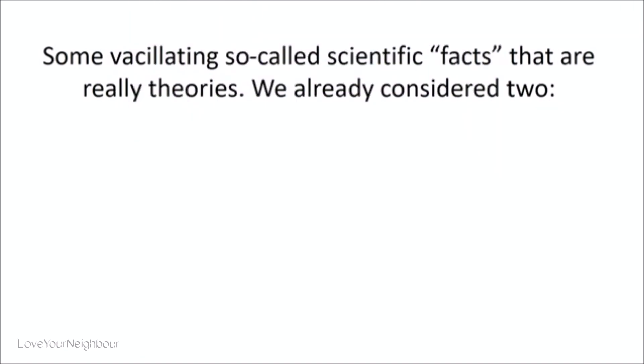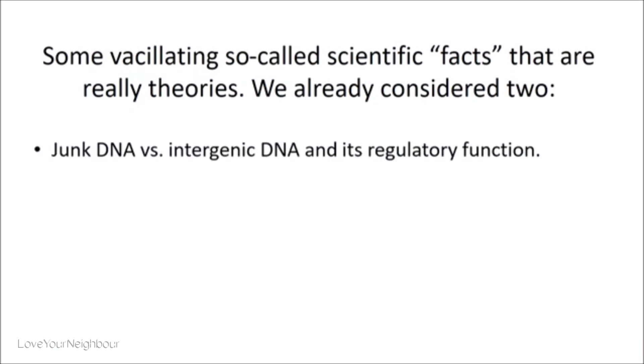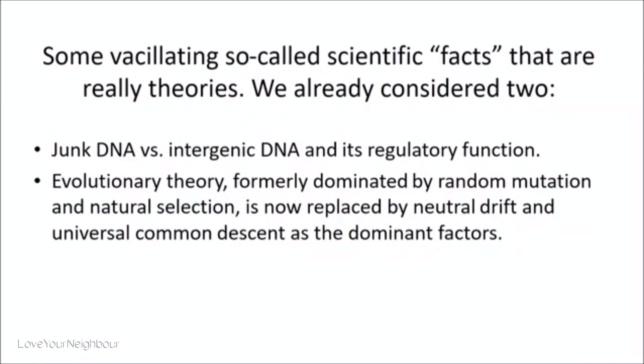Here are some vacillating so-called scientific facts that are really theories. First: junk DNA versus intergenic DNA. Twenty years ago it was said that 98.5% of DNA is junk with no regulatory function. Now that's changed — what was called a scientific fact turned out not to be, because facts don't change; theories change. Second: evolutionary theory formerly dominated by random mutation and natural selection is now replaced by neutral drift and universal common descent. The thing drilled into people — that random mutation and natural selection was what evolution is all about — turns out to be wrong. It's not fact at all.